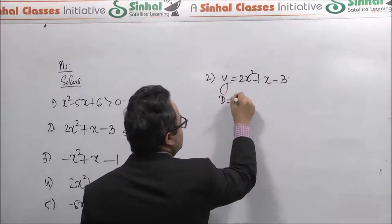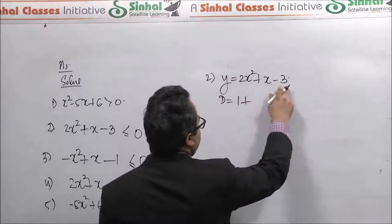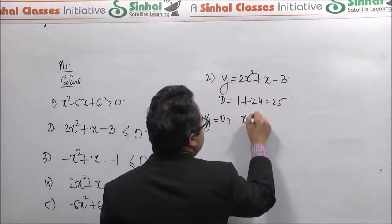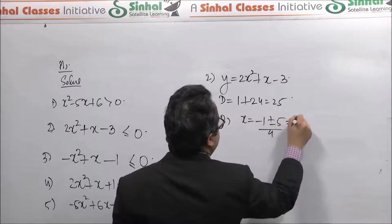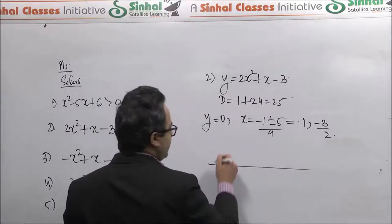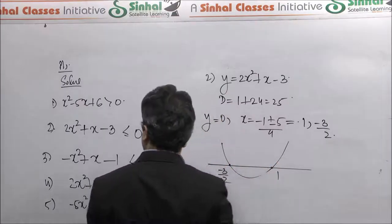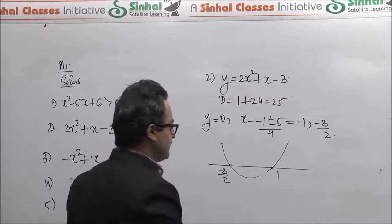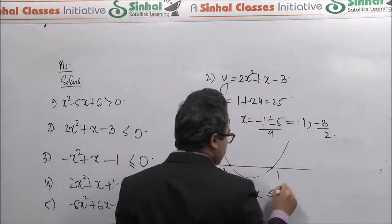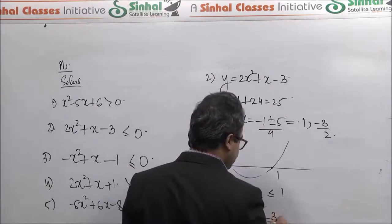For the second example, the discriminant is 1 plus 24 equal to 25, which is positive. Putting y as zero gives x as minus 1 plus or minus 5 over 4, giving roots 1 and minus 3 over 2. The parabola opens up and the points of intersection are minus 3 over 2 and 1. We want y less than or equal to zero, so the graph should be below the x-axis — that happens between minus 3 over 2 and 1, including both endpoints. In bracket notation: square brackets minus 3 over 2 to 1.